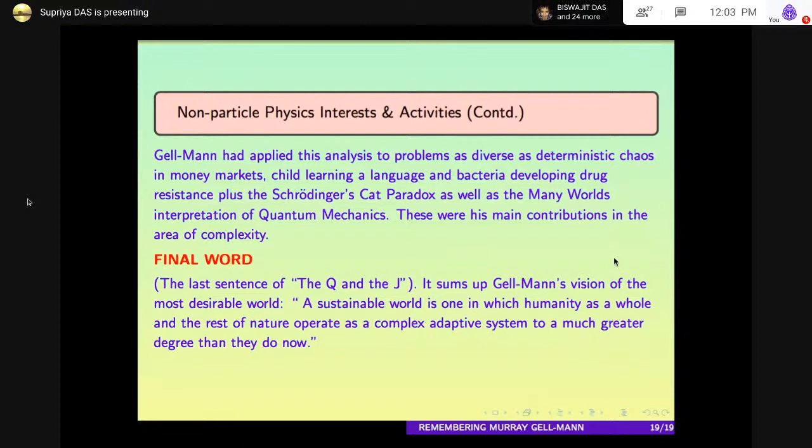I think I have come to the end of my talk. I think Gell-Mann's vision of the world can be summed up by the last sentence of his book. He wrote a book called The Quark and the Jaguar. This book I have read, and the last sentence of this book sums up his vision of the most desirable world: 'A sustainable world is one in which humanity as a whole and the rest of nature operate as a complex adaptive system to a much greater degree than they do now.' With this sentence, Gell-Mann finished the book, and with this statement, I also finish my talk, and I'll take some questions. Thank you.